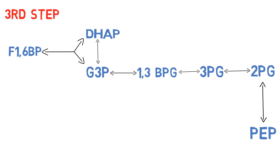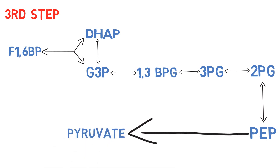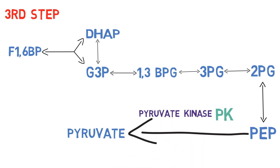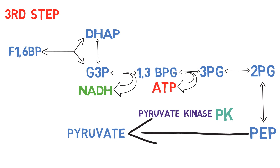As the third main step, PEP is converted into pyruvate by an irreversible reaction, done by the pyruvate kinase enzyme. As products, we get NADH when G3P is converting into 1,3-BPG, ATP when 1,3-BPG is converting into 3-PG, and ATP when PEP converts into pyruvate.